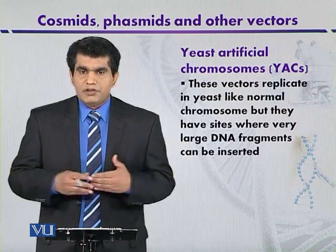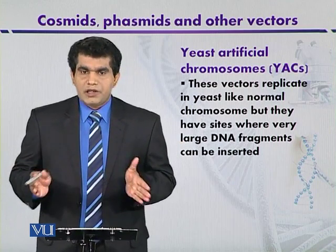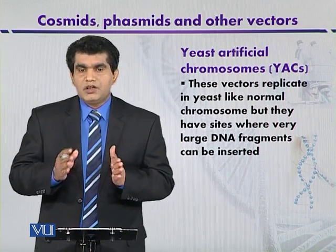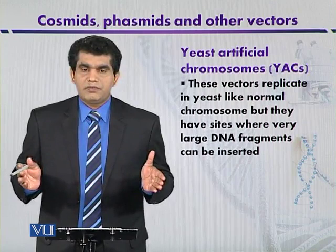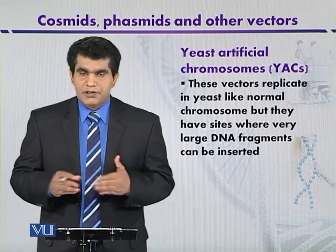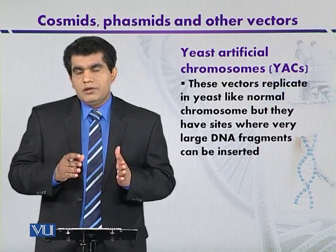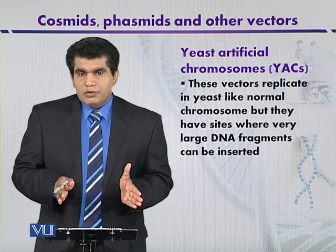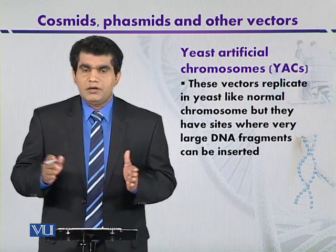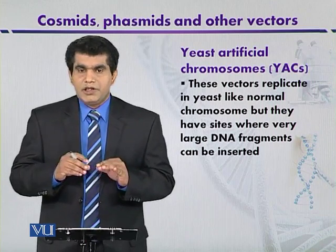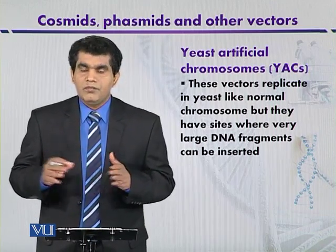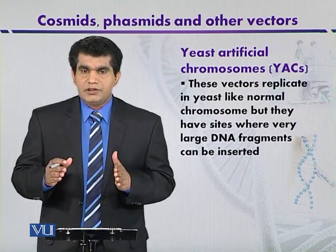The yeast artificial chromosome contains different DNA segments that are important. It also contains restriction sites for different types of enzymes that can be used to clone DNA fragments. The yeast artificial chromosome is digested with a suitable restriction enzyme, similar to how foreign DNA can be partially digested to create larger DNA fragments, and then these are ligated together.